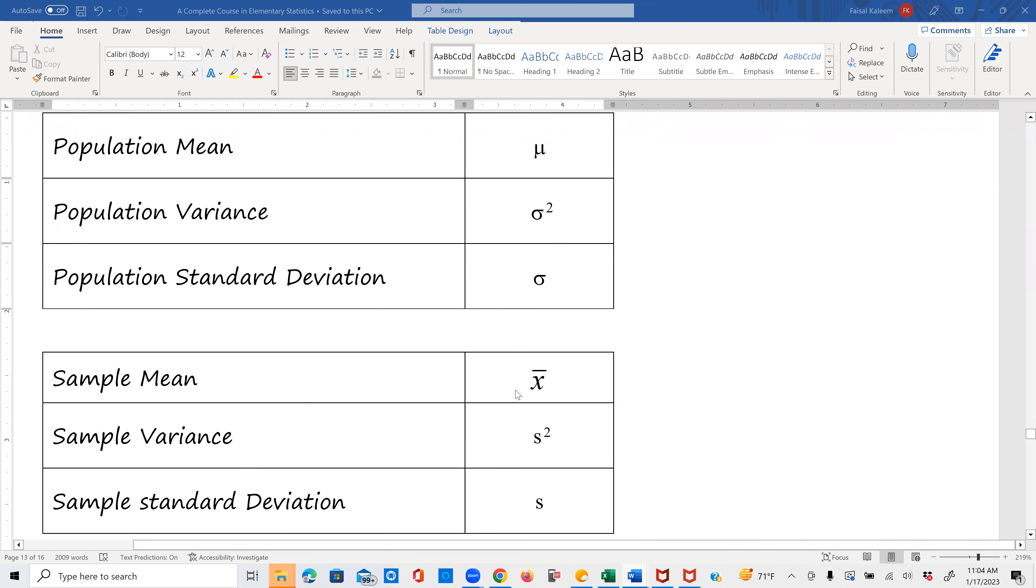Sample mean, x bar. Sample variance, s square. Sample standard deviation, s. So you see that for population, we have Greek letters. And for samples, we have the English letters. And that's one memory aid. And this is a list you have to know.